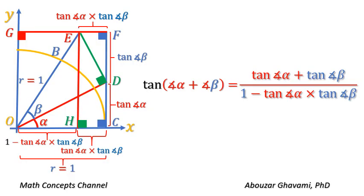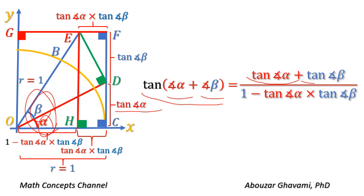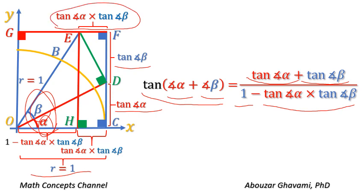We show that for any two angles alpha and beta, tangent of angle alpha plus angle beta equals tangent of angle alpha plus tangent of angle beta divided by 1 minus tangent of angle alpha times tangent of angle beta.